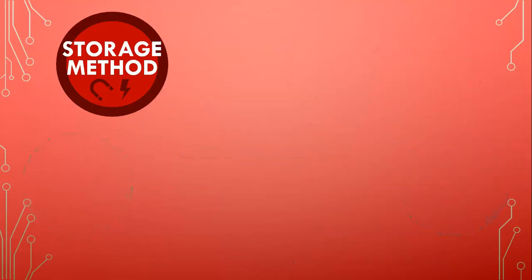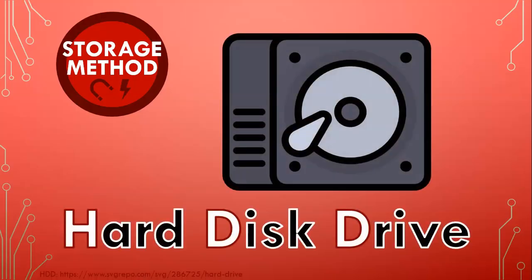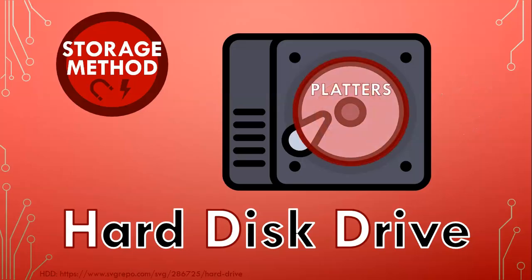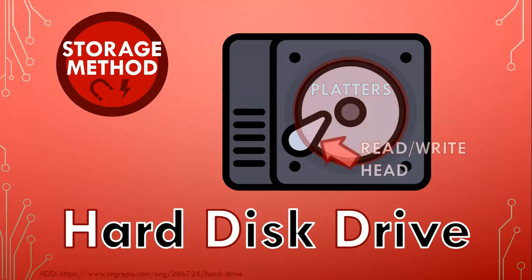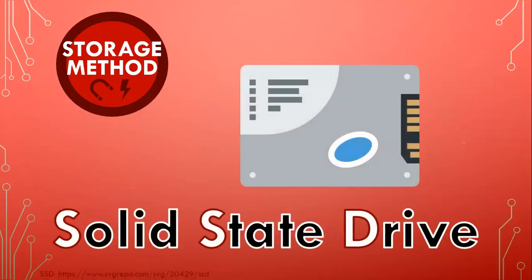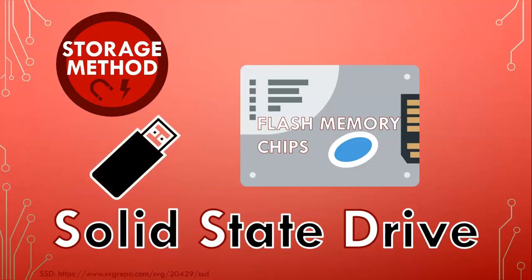Storage method refers to how the device stores data. Hard drives store data by magnetizing tiny areas on spinning disks to store and retrieve data. Inside a hard drive, you'll find spinning disks called platters and a read-write head, which is a mechanical arm that reads and writes the data. Solid state drives store data on electronic circuits with flash memory chips, similar to those in USB drives. They also contain a controller and cache — the controller manages data storage and retrieval, while the cache helps to improve performance.